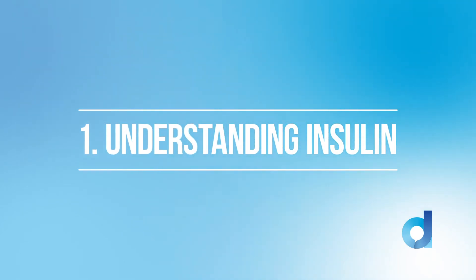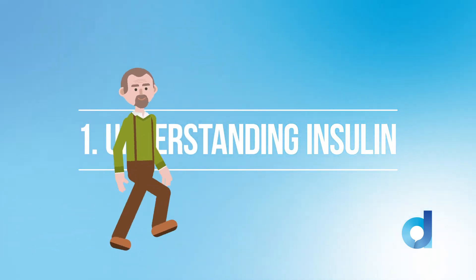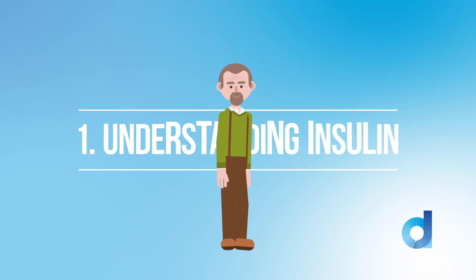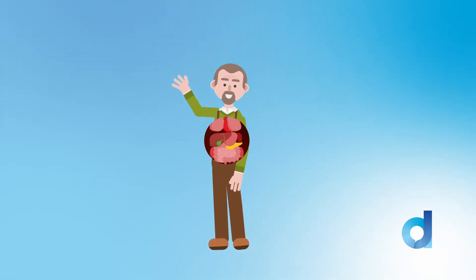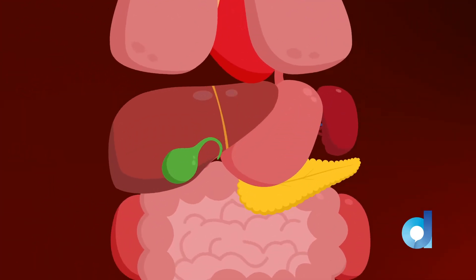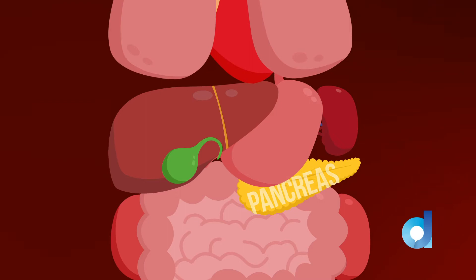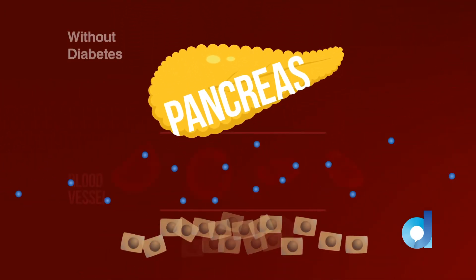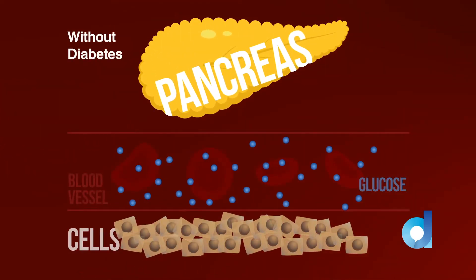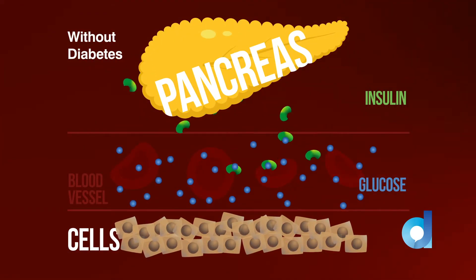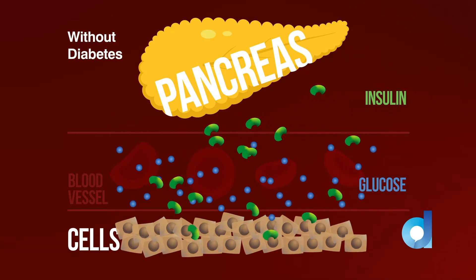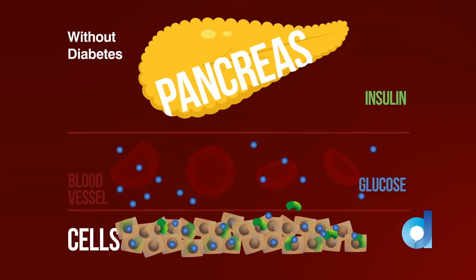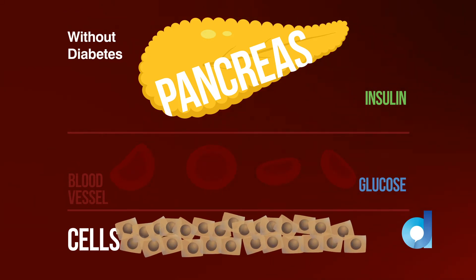Understanding Insulin. Insulin is a hormone produced by the beta cells in the pancreas. When blood glucose levels rise, insulin is released into the blood and targets receptors in tissue cells such as muscle and fat. Insulin allows these tissues to then take up glucose and so reduce the level in the blood.